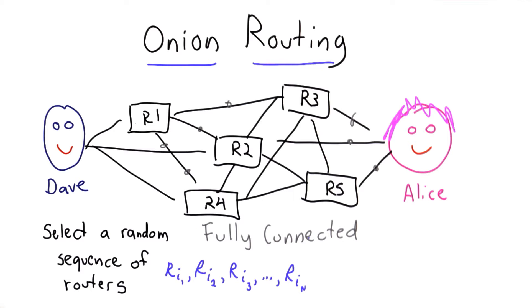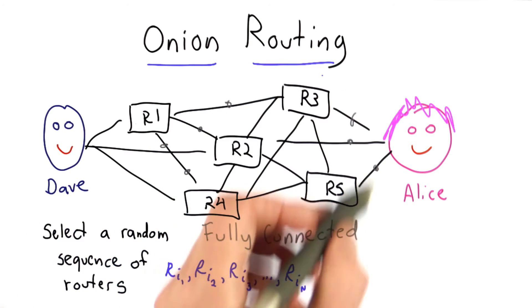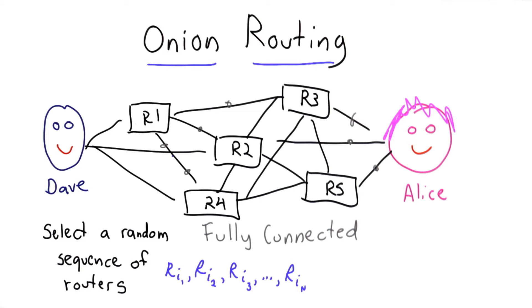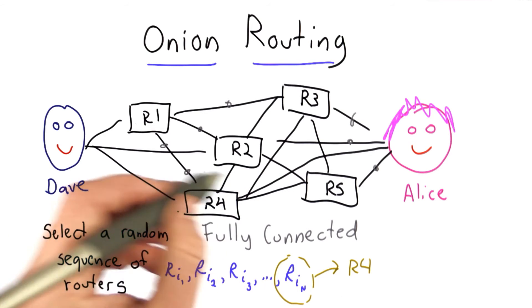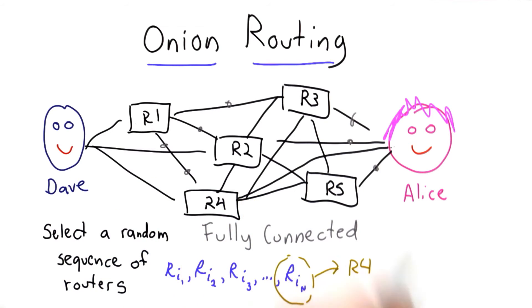So we'll select some random sequence of the routers. Each of these I values is one of the values that identifies a router, and I'm going to send a message into this network. Let's assume for now that the last router that I select is R4. I want it to be the case that R4 sends the final message to Alice that Alice can read.